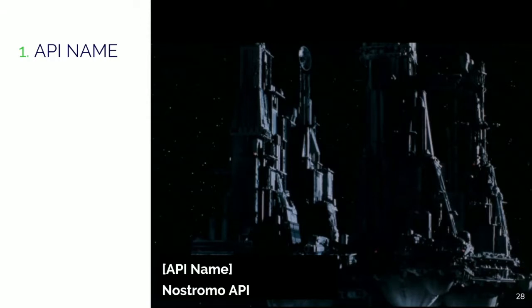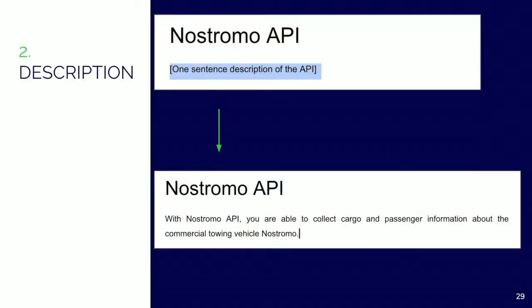I made a mock API as an example for this presentation, inspired by the first Alien movie by Ridley Scott. So that's why the API name is the Nostromo API in this case. The second section is the description — a short, one or maximum two sentences long description of the API.